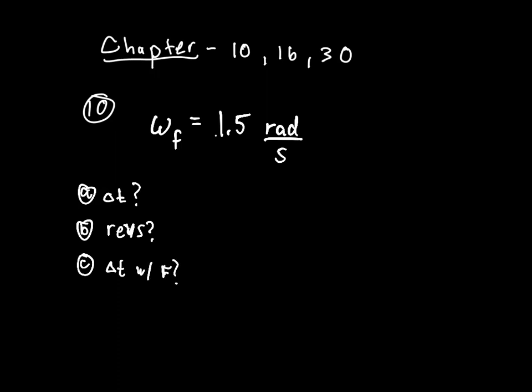So we've got three questions: we need to know how long it takes to get it up to this speed, how many revolutions in that time, and how long it's going to take to slow it back down and stop it once it has reached that speed.